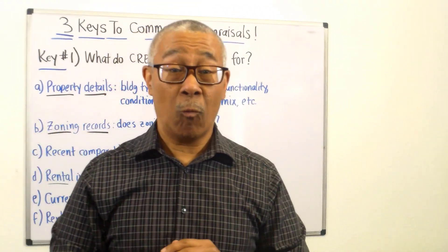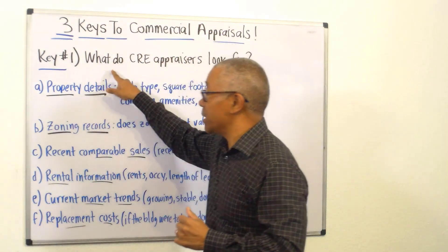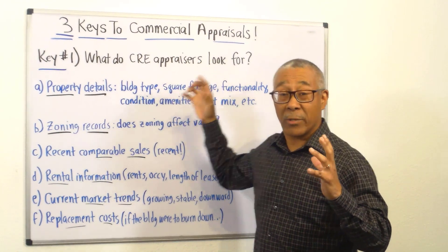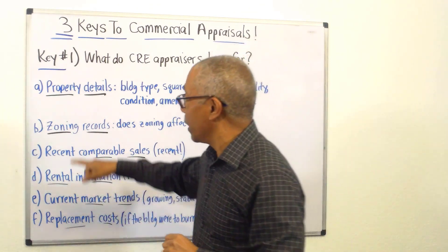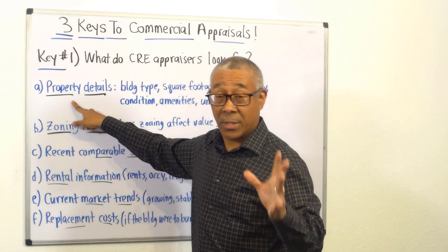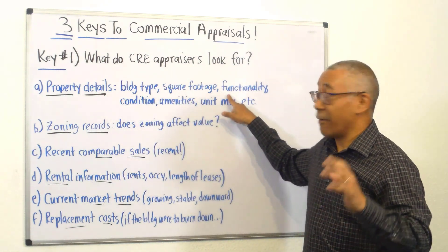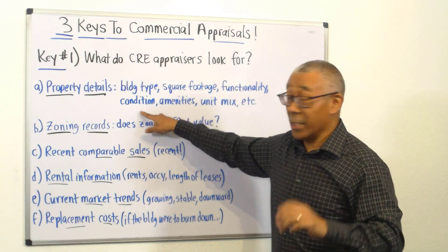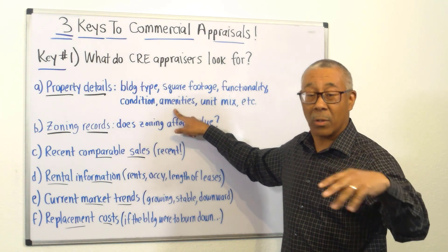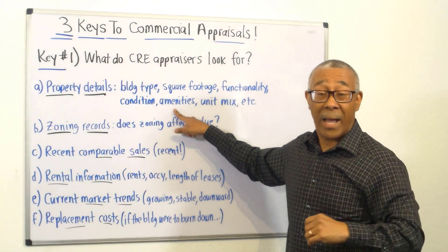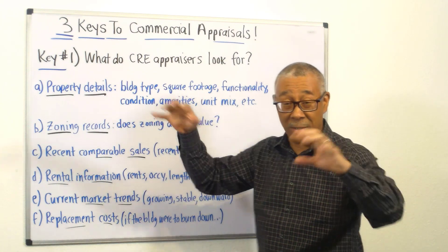Key number one: what do commercial appraisers look for when appraising a commercial property? Number one is property details. They need to know the property type, the building type, the square footage, the size, the functionality, the condition of the property, any amenities like a pool, clubhouse, or rooftop access, and the unit mix.